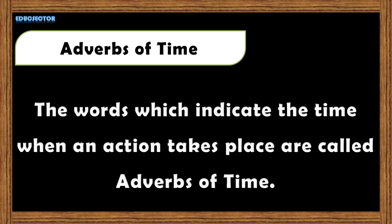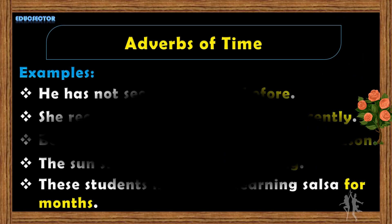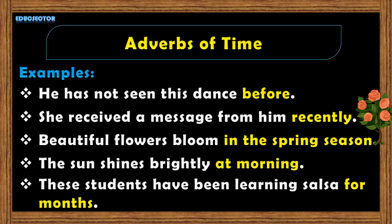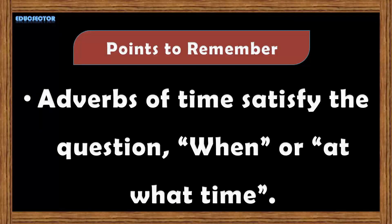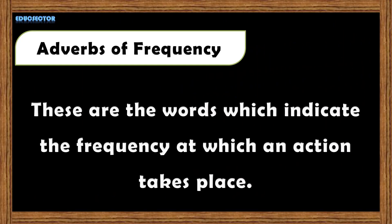Adverbs of time are the words which indicate the time when an action takes place. For examples: 'He has not seen this dance before.' 'He received a message from him recently.' 'Beautiful flowers bloom in the spring season.' 'The sun shines brightly at morning.' 'These students have been learning salsa for months.' Here the words before, recently, in the spring season, at morning, for months are examples of adverbs of time. Adverbs of time satisfy the question 'when' or 'what time.'